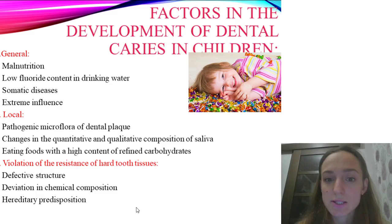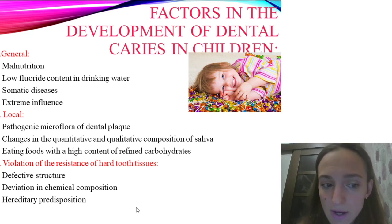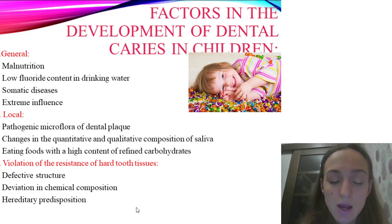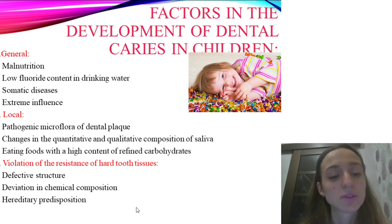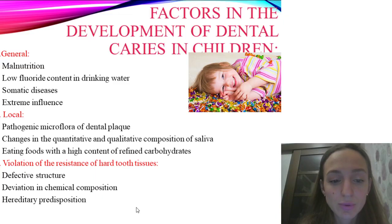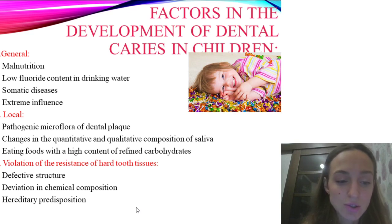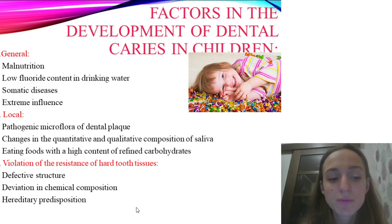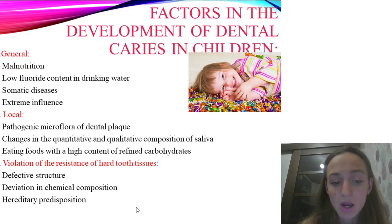Factors in the development of dental caries in children are grouped into three categories. The first group is general factors: malnutrition, low fluoride content in drinking water, extreme influences, and somatic diseases. The second group is local factors: pathogenic microflora of dental plaque, changes in quantitative and qualitative composition of saliva, and eating foods with high content of refined carbohydrates. The third group is violation of the resistance of hard tooth tissues: defective structure, deviation in chemical composition, and hereditary predisposition.